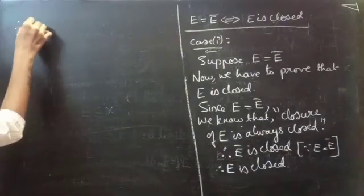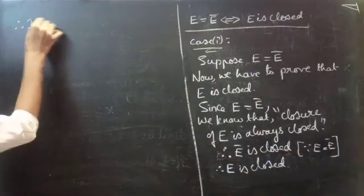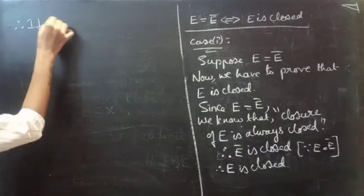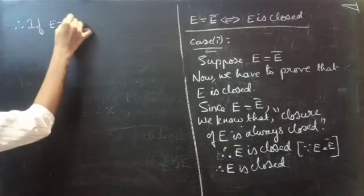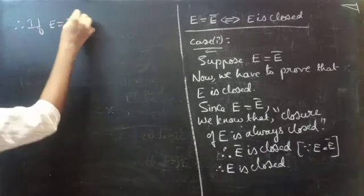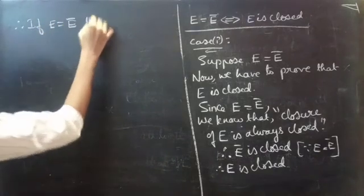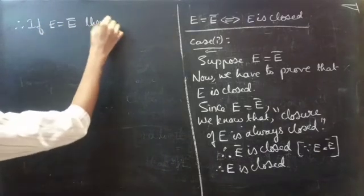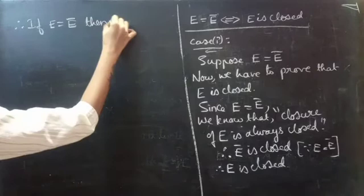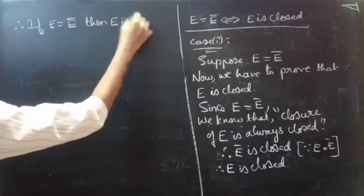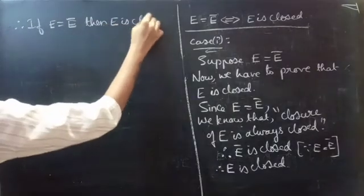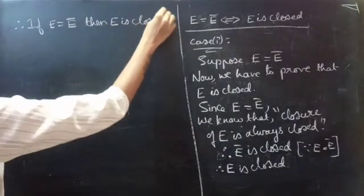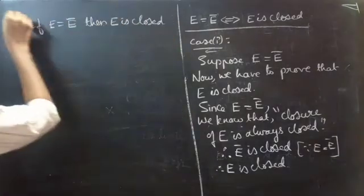Therefore, if E equals E-bar, then E is closed. Consider this as result A.